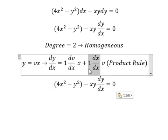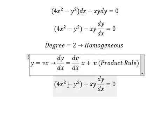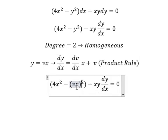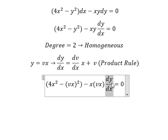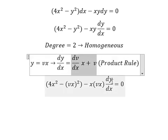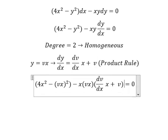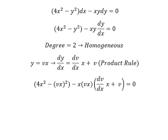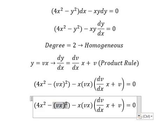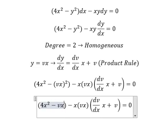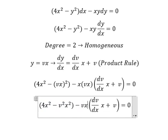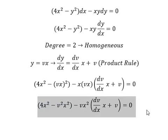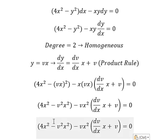So this one we have number one. y we change for vx, this one that is about vx. dy over dx that is about this one. This one is about v squared x squared, this one is about vx squared. Later we divide both sides by x squared.